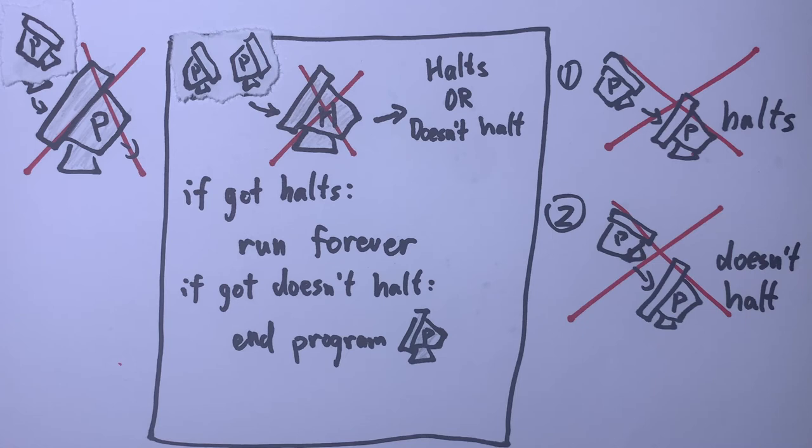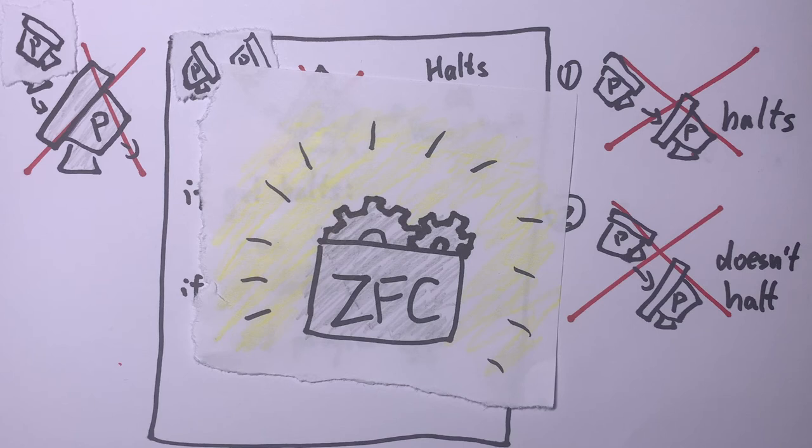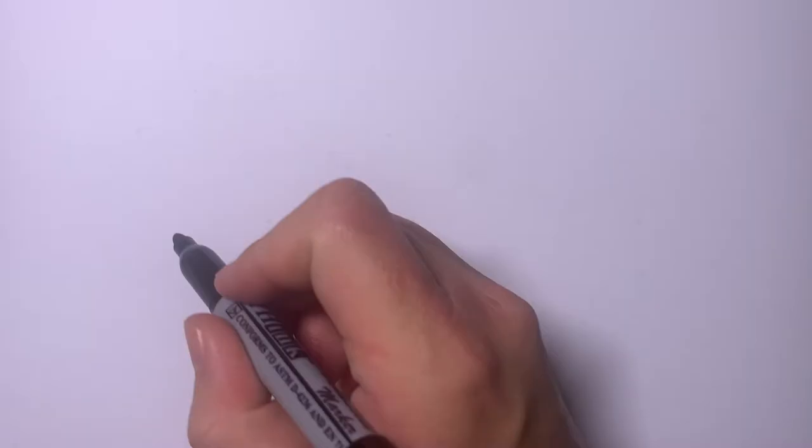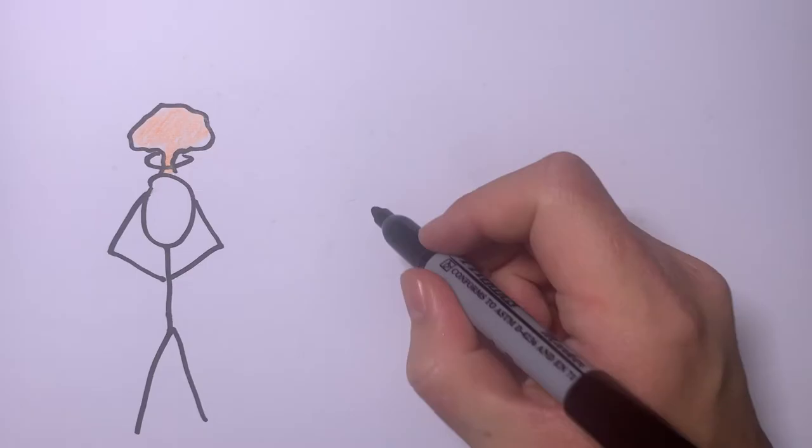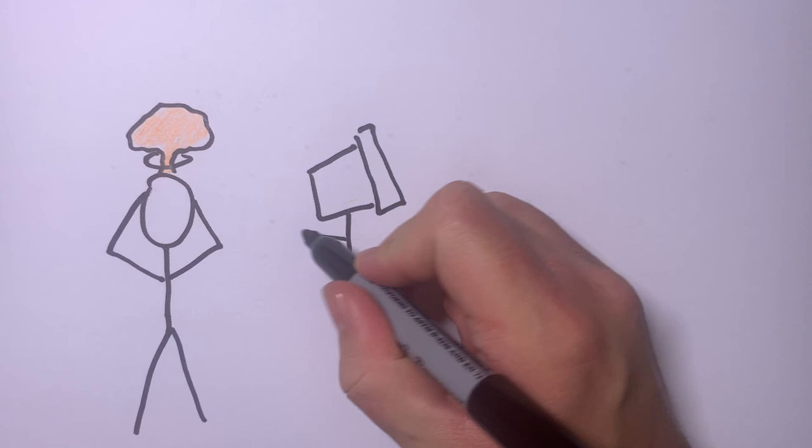Because the halting problem is mathematically rigorous, we can actually use it to further our mathematical understanding. There are actually things our computers will never be able to do, no matter how powerful they become. Isn't that just so mind-boggling? And people say computer science is boring.